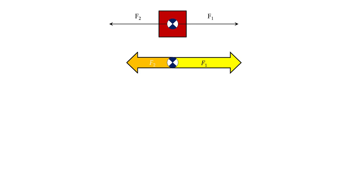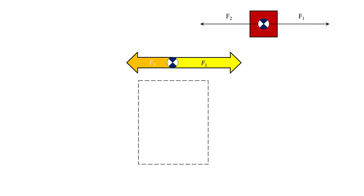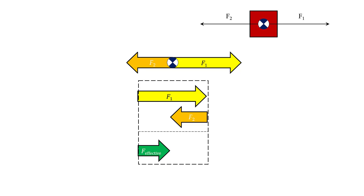Now if F1 were larger than F2, that would cause the box to accelerate to the right. We determined that by putting the tip of one vector to the tail of the other, and then from the tail of the first to the tip of the second would be our effective force vector. That effective force vector is going from left to right, so we would also have an acceleration that went from left to right.